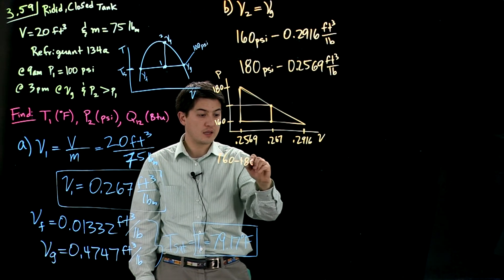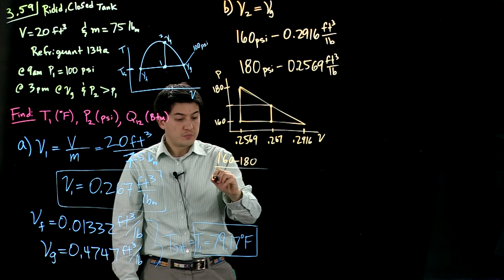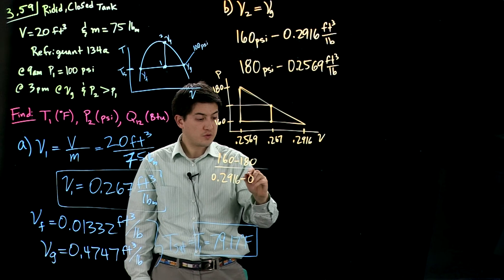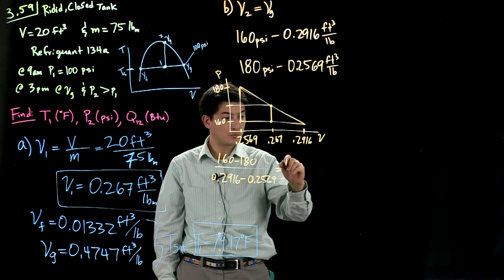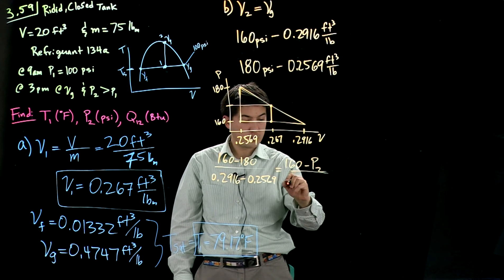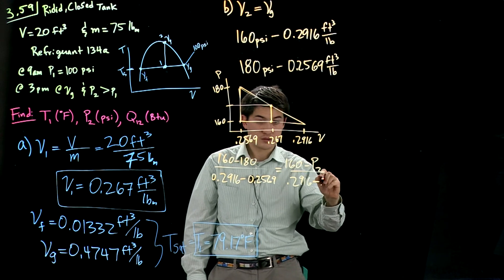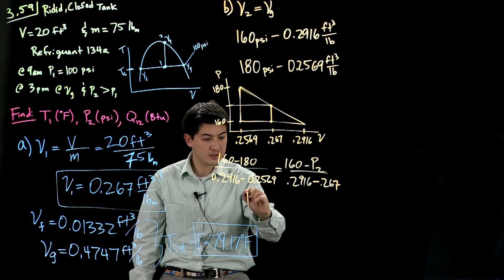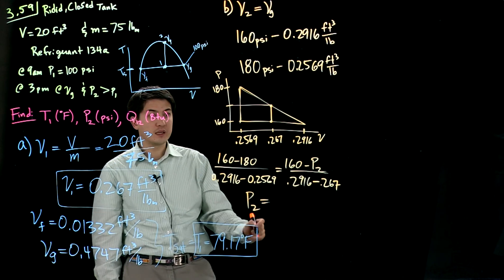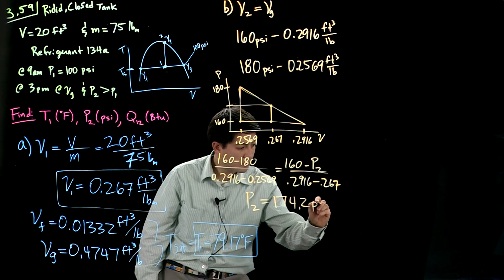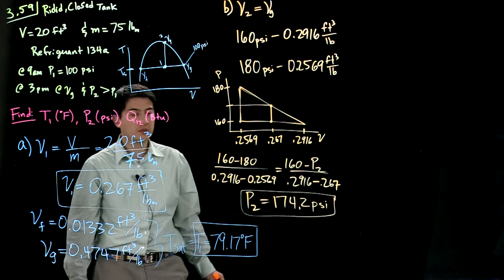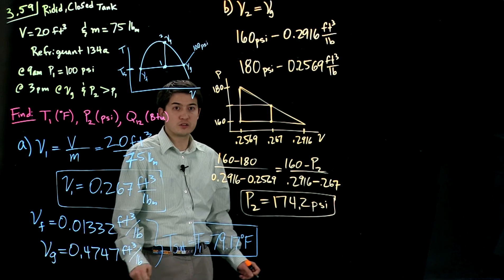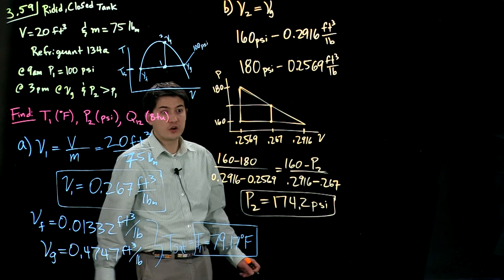So linearly interpolate. 160 minus 180 over 0.2916 minus 0.2569 equals 160 minus P2 over 0.2916 minus 0.267. Rearrange. Solve for P2. P2 is going to be 174.2 psi. Does this make sense? Does it fall between here and here? Yes. The sanity check. We're good so far. So this is P2 in psi.